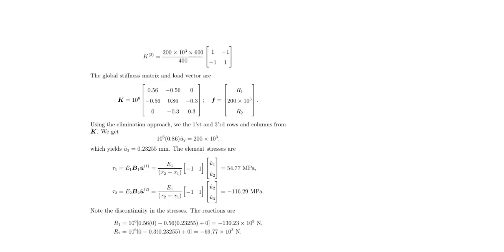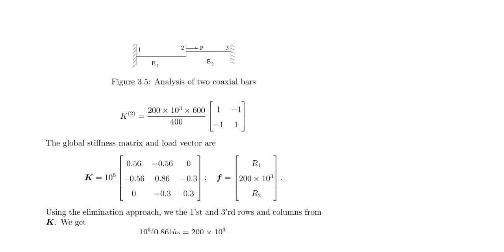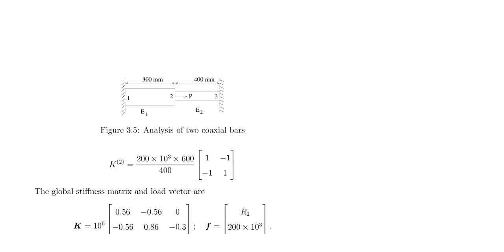Here is the diagram. The values of E1, E2, A1, and A2 are mentioned. The lengths L1 and L2 are given. The nodes are connected as 1, 2, and 3, and both ends are fixed. A load is applied at node 2. This is element 1 and element 2.